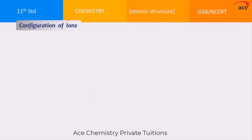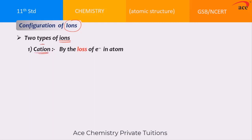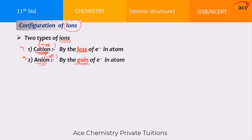Let us talk about configuration of ions. There are two different types of ions: cations, which have a positive charge, and anions. Cations are formed by loss of electrons, while anions are formed by gain of electrons. Anions have negative charge and cations have positive charge. Generally, metals form cations and non-metals form anions by gain of electrons, which is reduction.